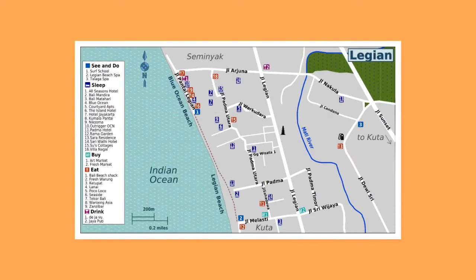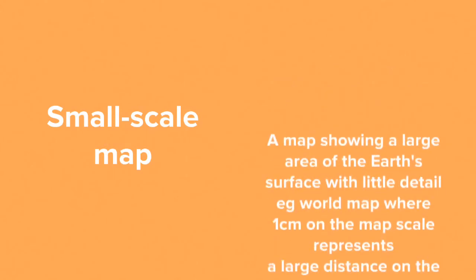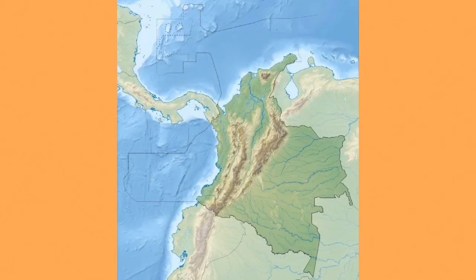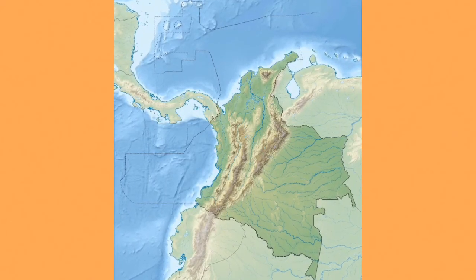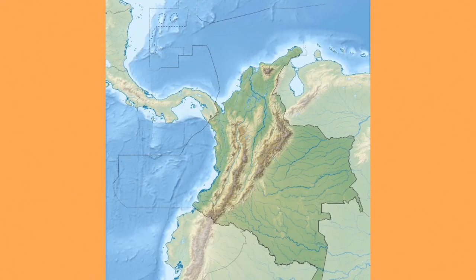This is a tourist map, so we've got the streetscape and so much detail that we can point out Jaya Pub, Deja Vu, and the Bali Beach Shack. So what's a small-scale map? This is a map showing a large area of the Earth's surface but with very little detail — for example, a world map where a centimetre on the map scale represents a huge distance on the land. An example would be this map to the right of the country of Colombia. While we can see the major landforms such as mountain ranges and the main rivers, we're not getting the same level of detail as a large-scale map.